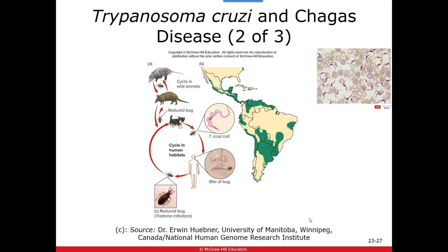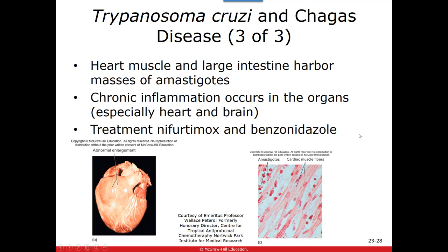On a blood smear you can clearly see trypanosomes among the red blood cells. The amastigote stage can also be found in cardiac muscle tissue itself, causing inflammation and damage to the heart, which long-term leads to congestive heart failure. Chagas disease is treatable with antiprotozoan drugs, but the sooner treatment is started, the less damage is done.